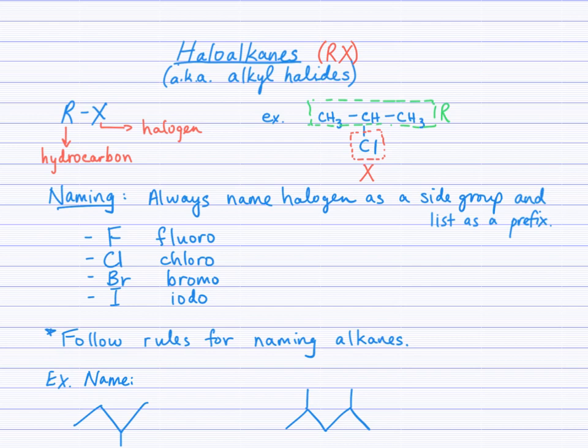There are four halogens: fluorine, chlorine, bromine, and iodine. And each of those, the ending is adjusted with the O, and so a side group of fluorine is named fluoro. Watch your spelling. Chlorine becomes chloro, Br is bromo, and I is iodo.